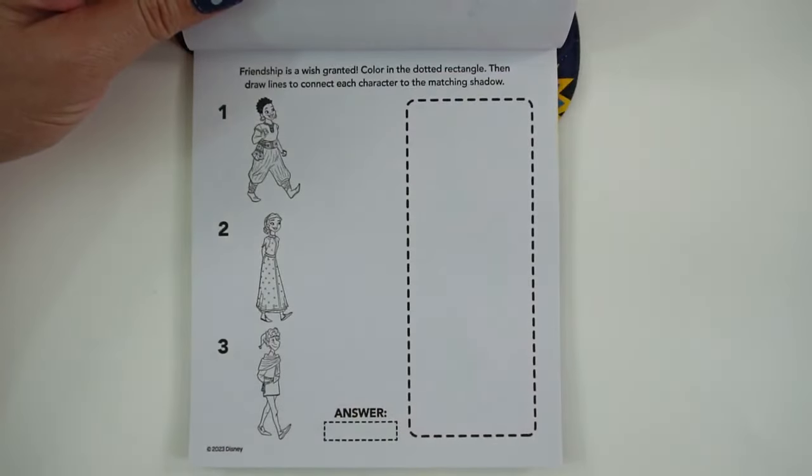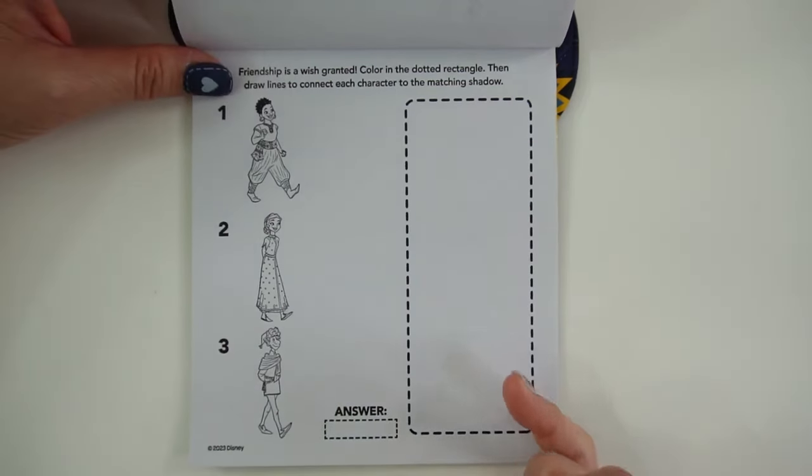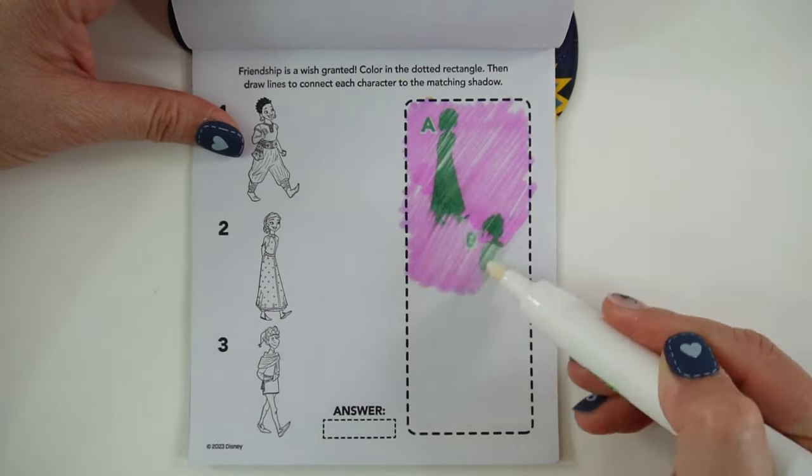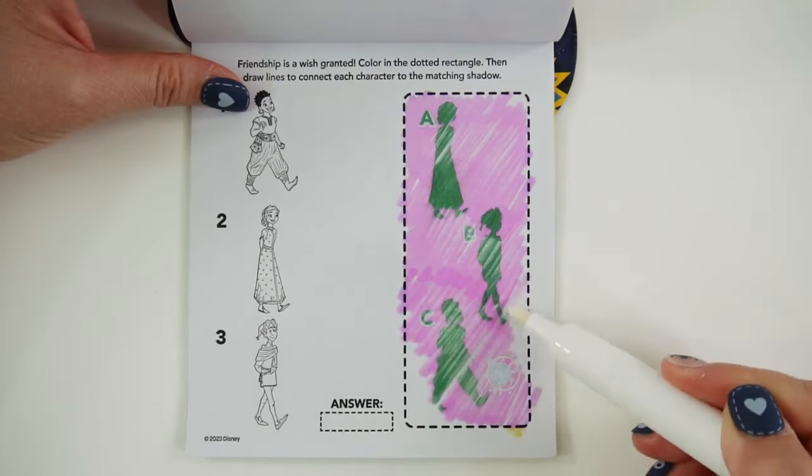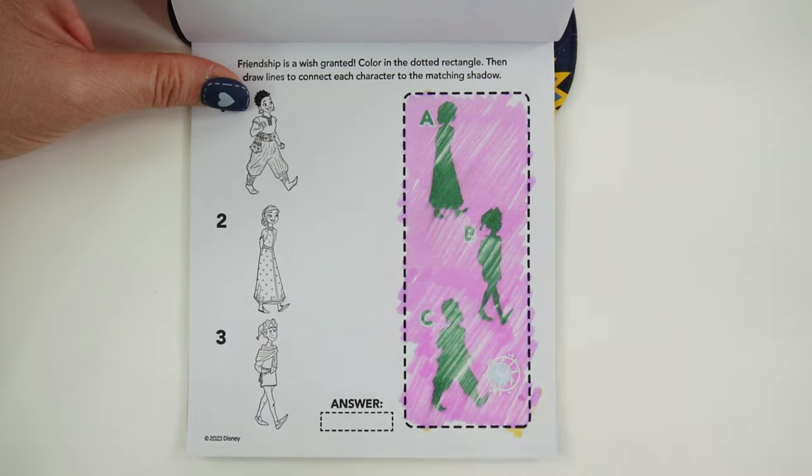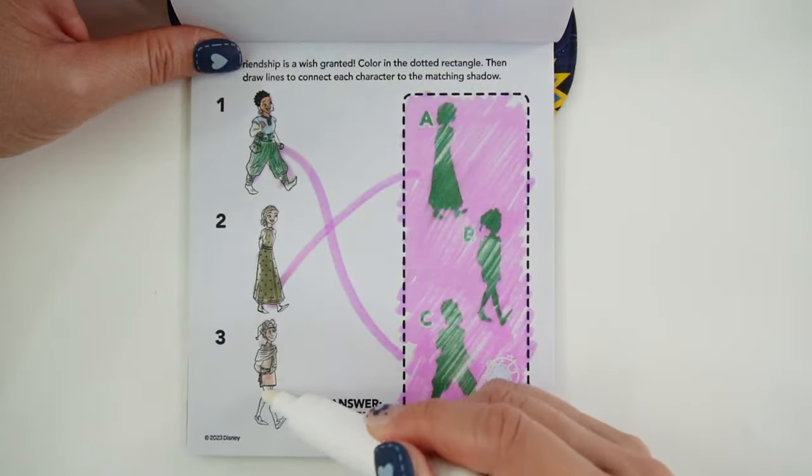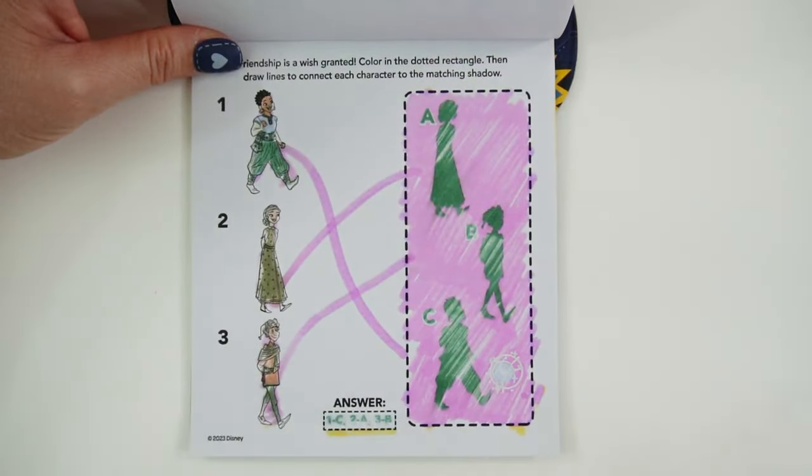Friendship is a wish granted. Color in the dotted rectangle. Then draw lines to connect each character to the matching shadow. Here's the star. Now let's match the shadows. We did it.